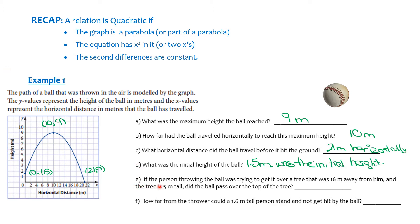Here's an interesting question. If the person throwing the ball was trying to get it over a tree that was 16 meters away, and the tree is 5 meters tall, did the ball pass over the top of the tree? We're going to assume we're talking about the person throwing the ball.